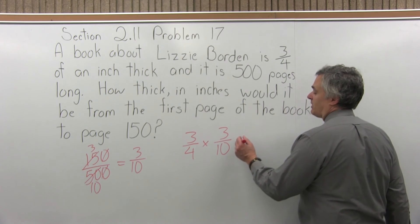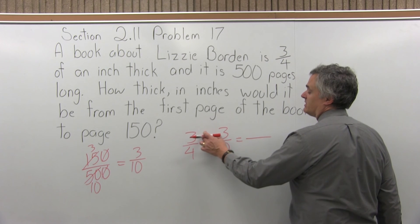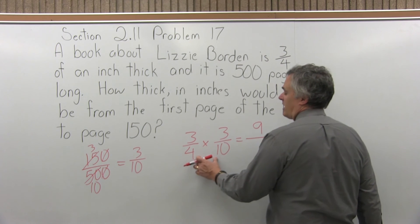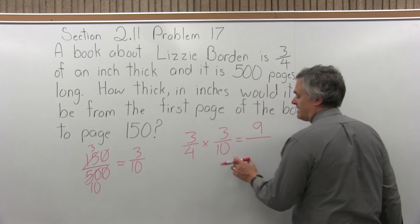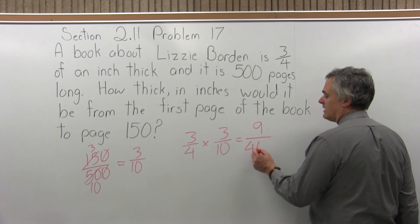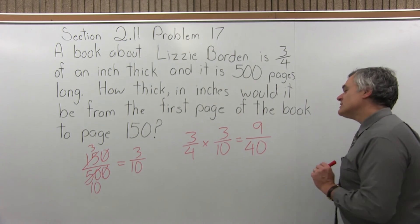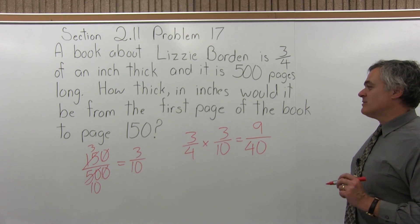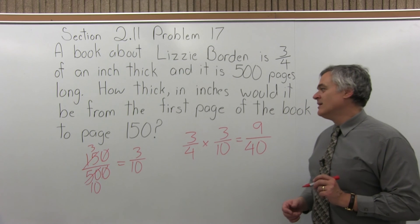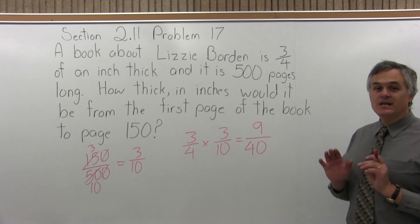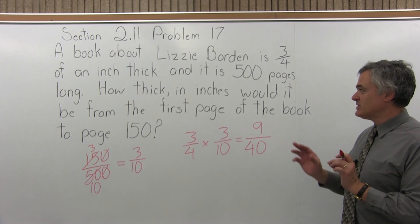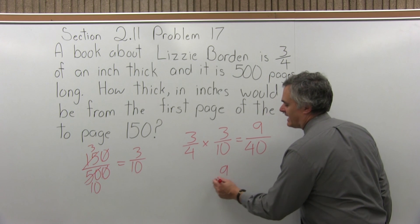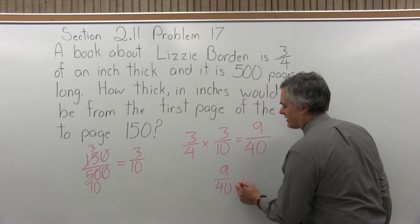So we just go ahead and multiply. Numerator times numerator: 3 times 3 is 9. Denominator times denominator: 4 times 10 is 40. We try to reduce 9 over 40, but we cannot. So from page 1 to page 150, the book is 9 fortieths of an inch thick.